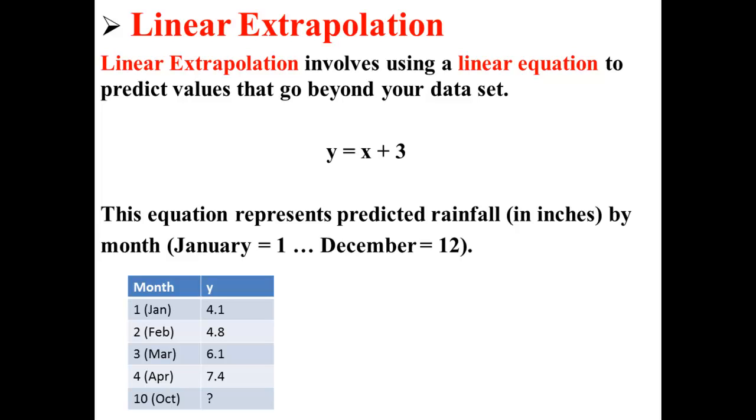Because we have this equation, we could predict what the rainfall would be in October. We plug in October, which is 10, into the equation. So y is equal to 10 plus 3, or 13. So we predicted 13 inches of rainfall in October, through linear extrapolation.